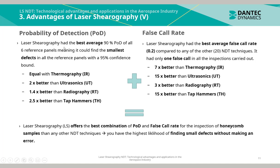Laser Shearography had the best average 90% probability of detection across all six reference panels, meaning it could find the smallest defects with a 95% confidence bound. It was equal with thermography, twice as good as ultrasonics, 1.4 times better than radiography, and 2.5 times better than tap hammers. For false call rate, Laser Shearography had the best average false call rate of 0.2 among all 20 technologies, with only one false call in all inspections carried out — 7 times better than thermography, 15 times better than ultrasonics, 3 times better than radiography, and 15 times better than tap hammers.